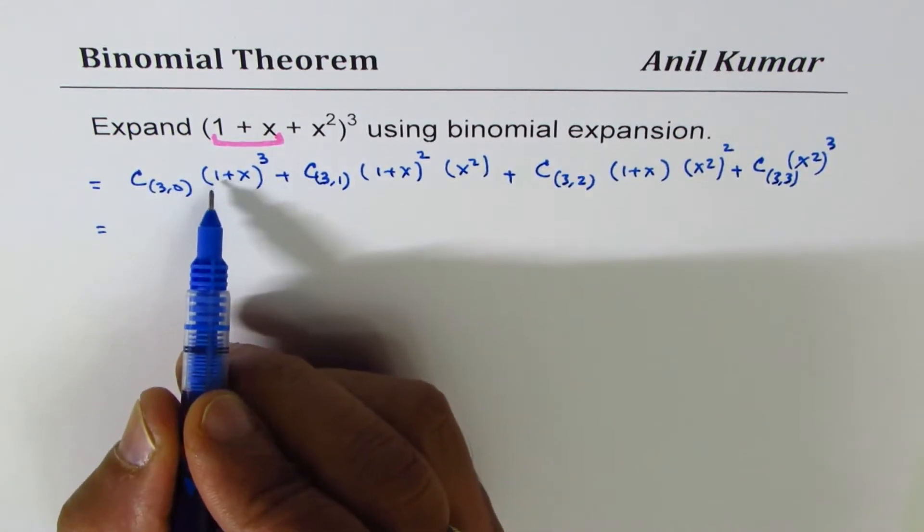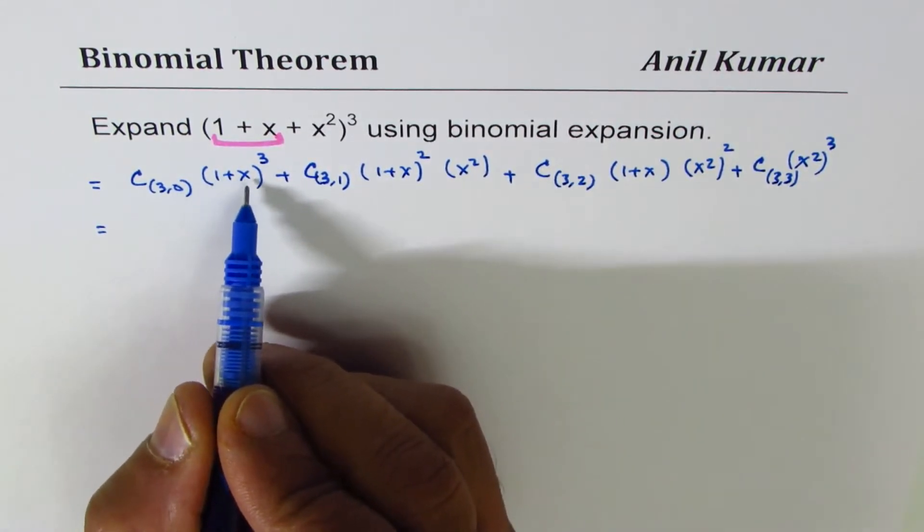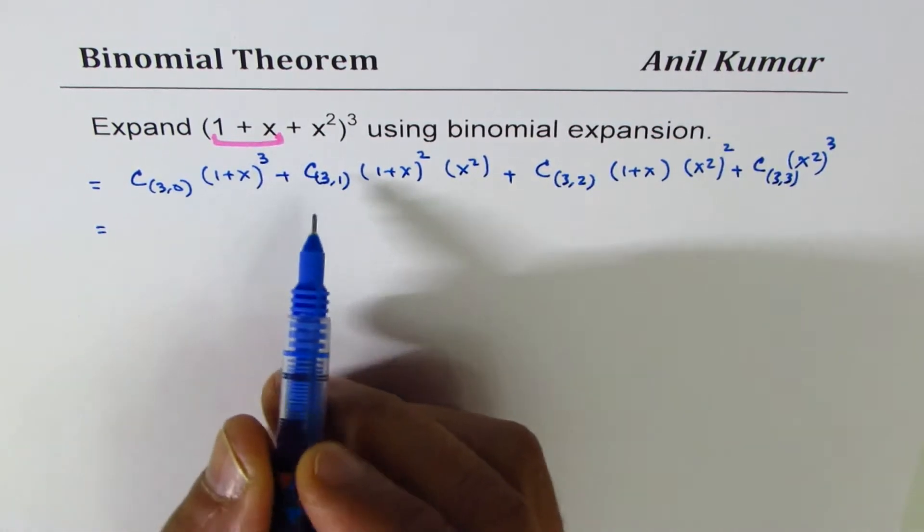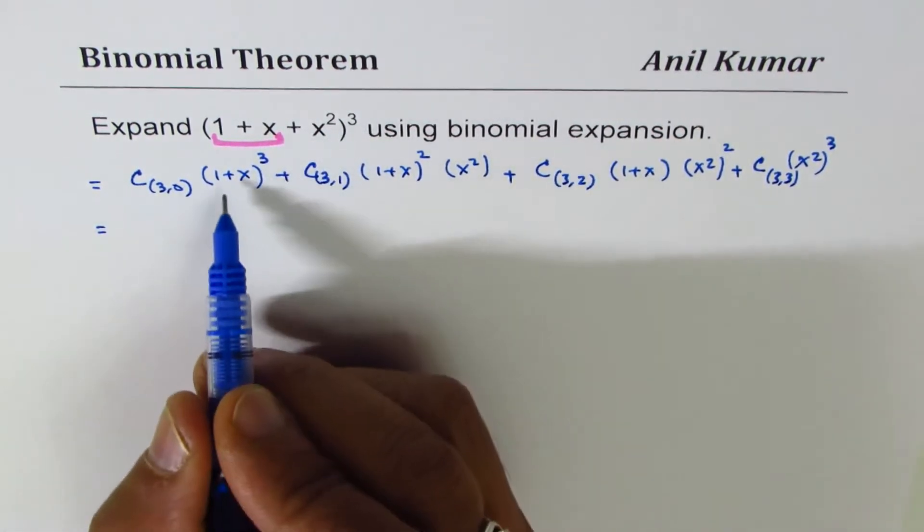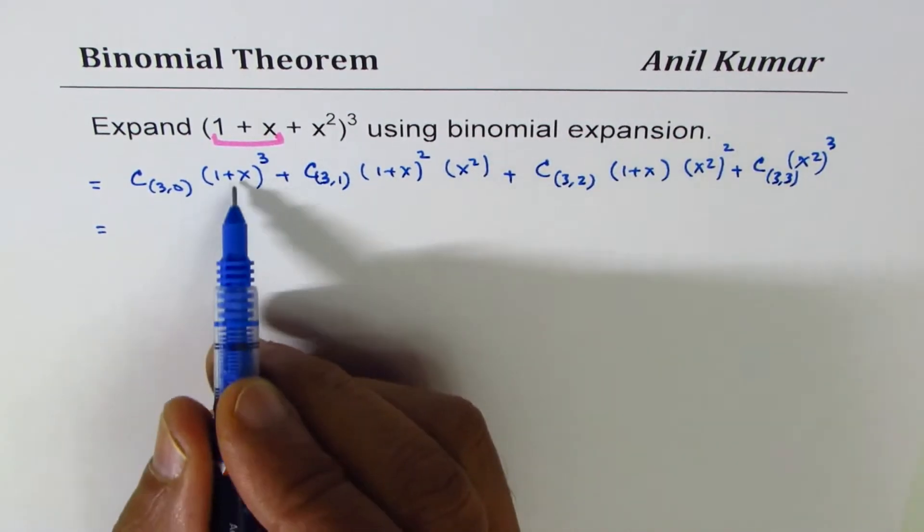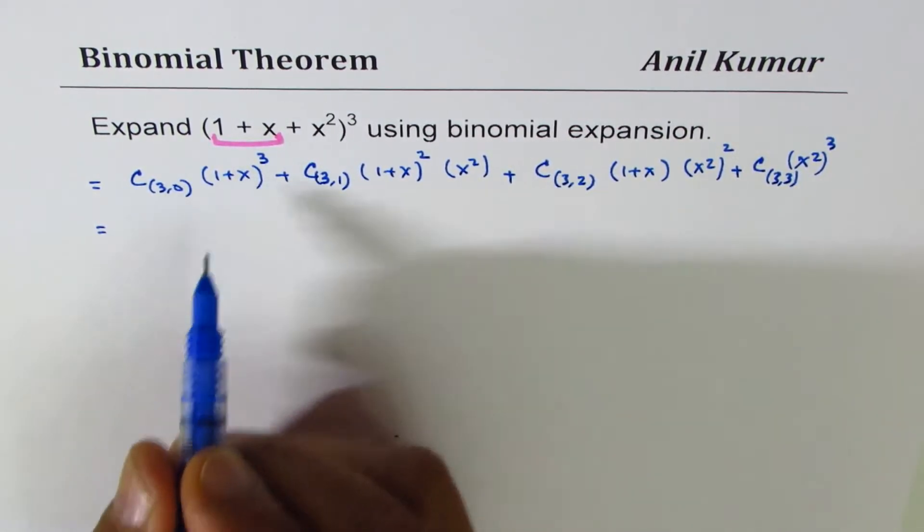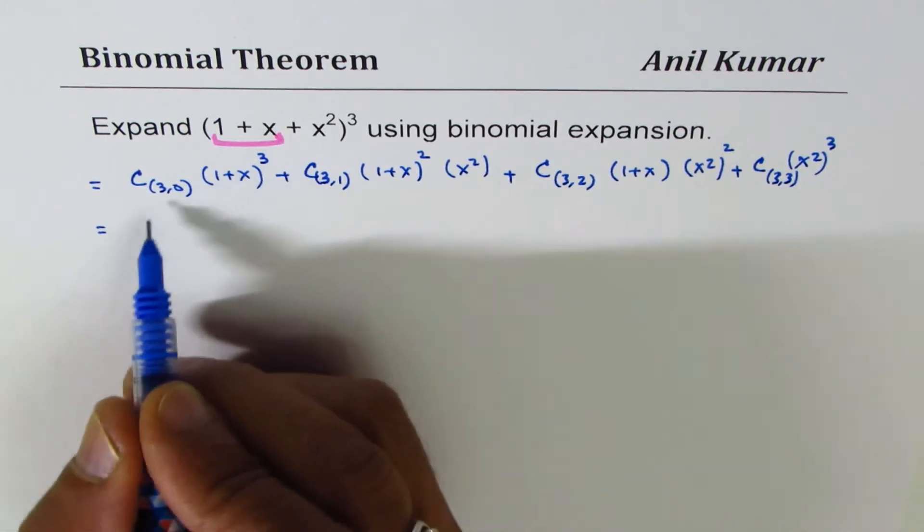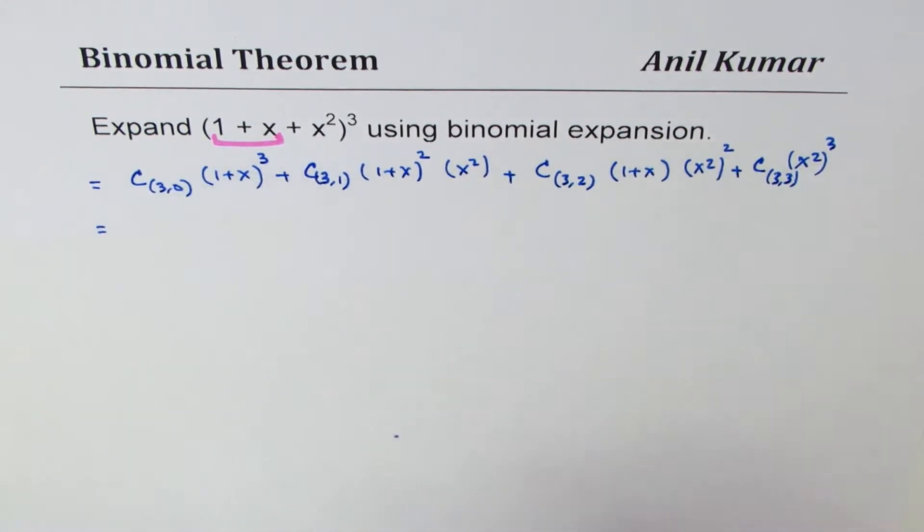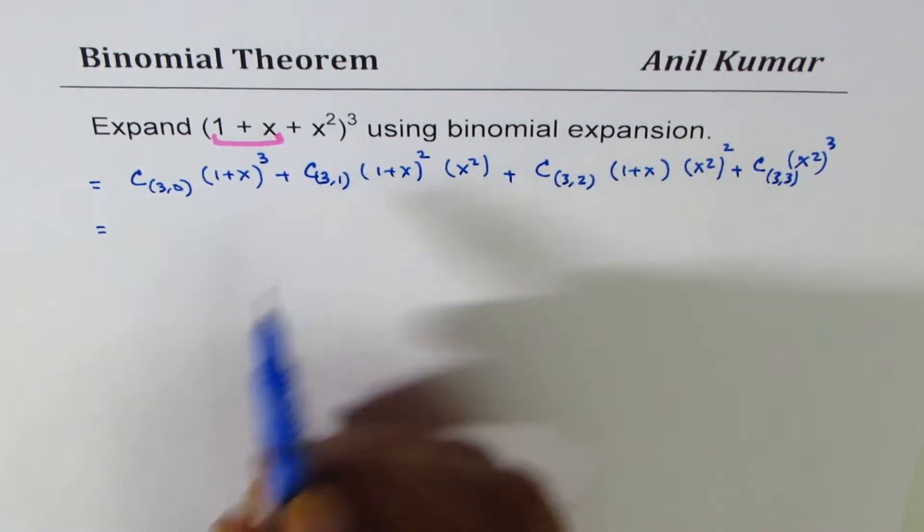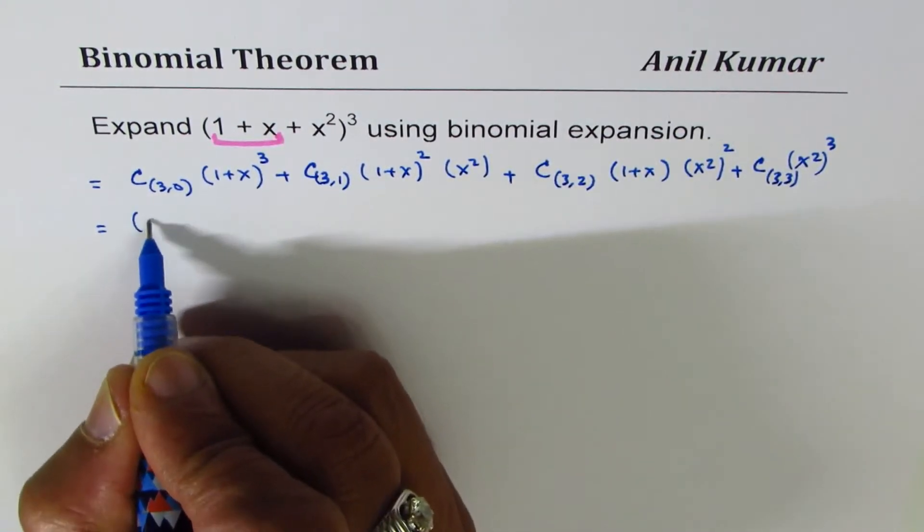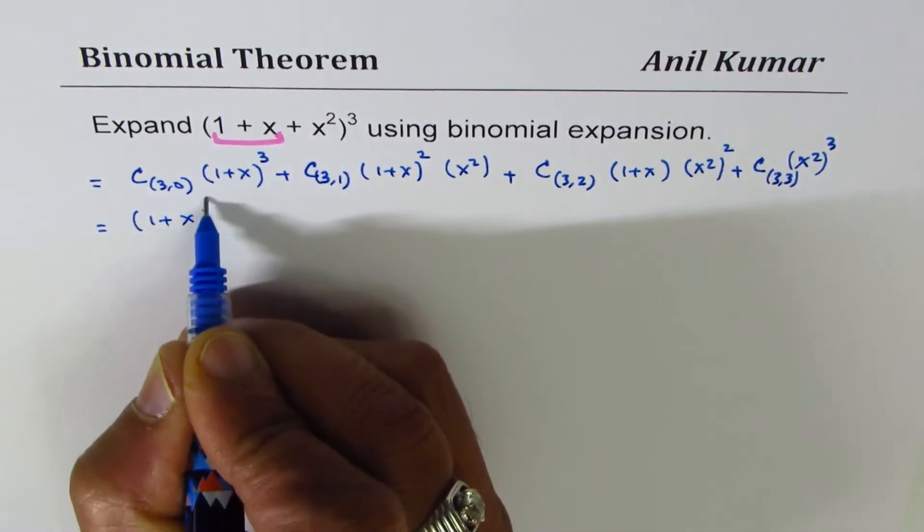Now that is one, we can again expand (1 + x)³ using binomial expansion. So let's expand this part - again expanding, or let me rewrite this with these coefficients and then we'll expand it.